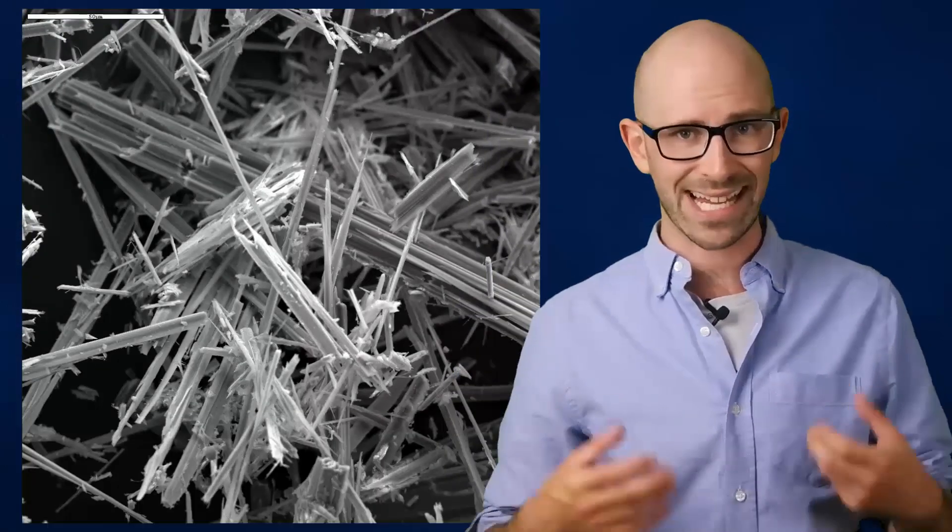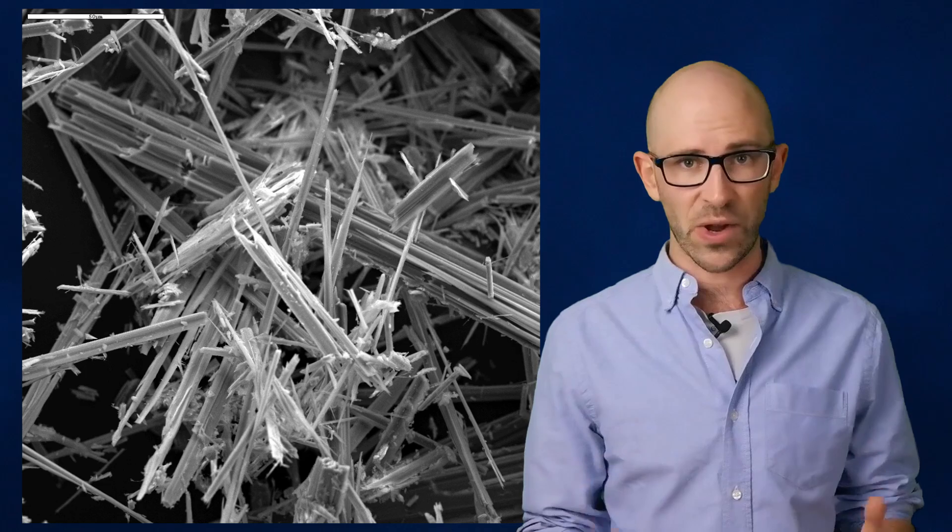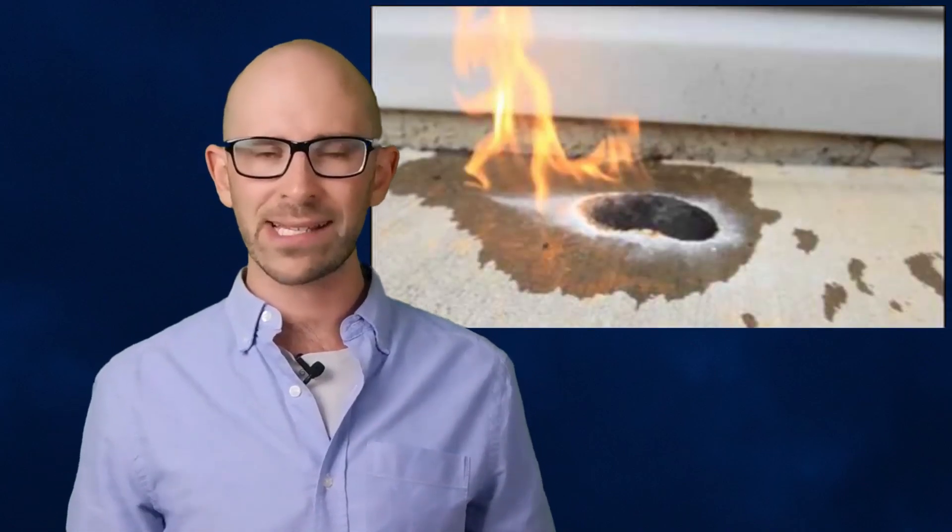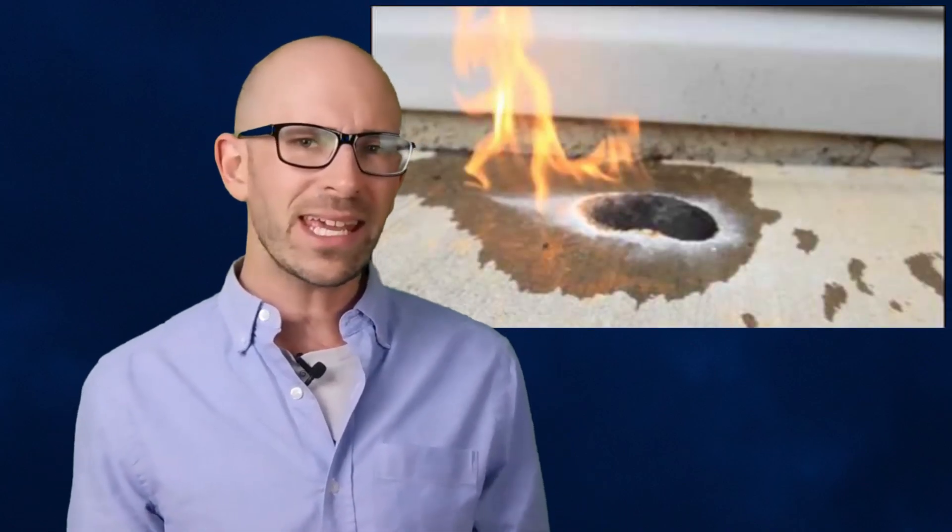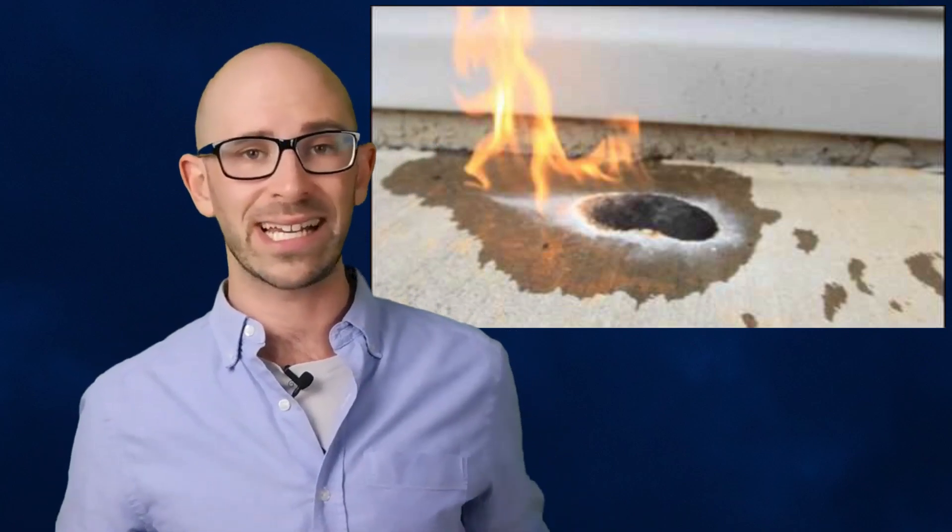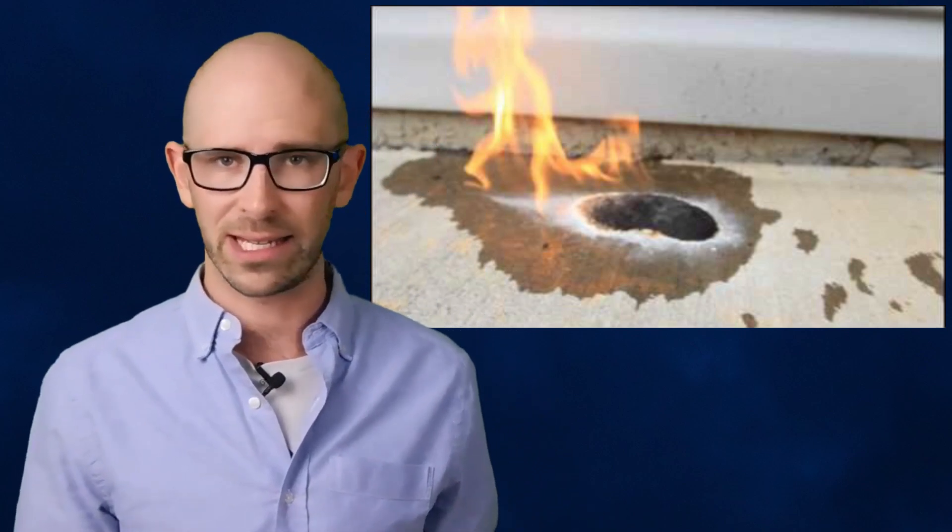Obviously, the first question to answer here is how chlorine trifluoride is somehow able to cause asbestos, a substance that is known for being almost completely fire-retardant, to catch fire. Well, that's because chlorine trifluoride is a more powerful oxidizing agent by mass than oxygen itself, meaning it's capable of rapidly oxidizing things that would normally be considered practically impossible to set aflame, like asbestos.